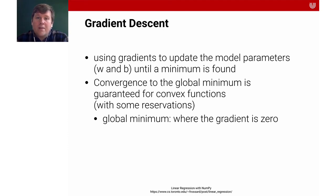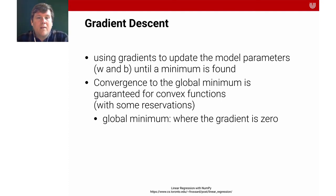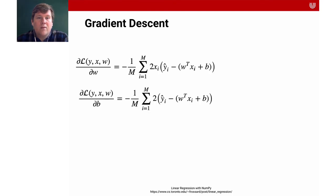There are different ways of computing this. For linear regression you might know the closed-form solution, but that doesn't scale for more complex models. So we use something called gradient descent: use the derivative to update the model parameters W and B until a minimum is found. Convergence to the global minimum is guaranteed for convex functions, where the global minimum is where the gradient is zero.